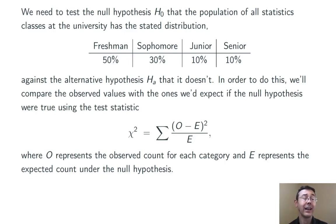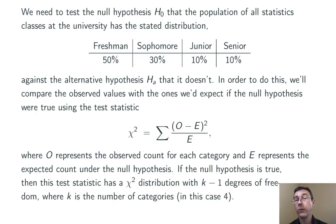We're going to compute a test statistic chi-squared as the sum of (O minus E) squared over E. Now, if the null hypothesis is true, this test statistic has a chi-squared distribution with k minus 1 degrees of freedom, where k is the number of categories.